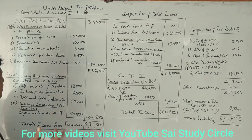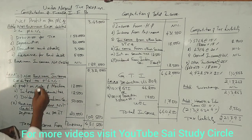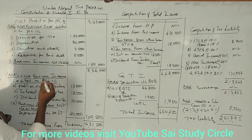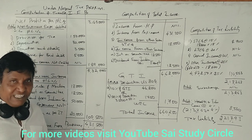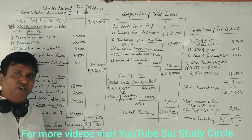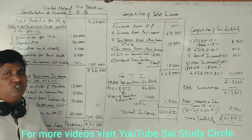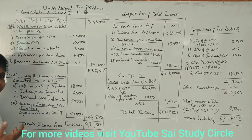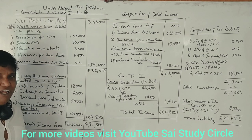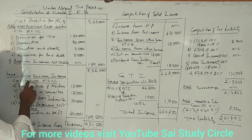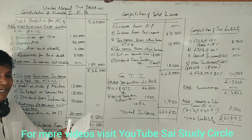The second addition item is business incomes not credited. We don't have any information about non-business incomes not credited in the adjustment, so ignore it. As per the proforma, we also have over-valuation of opening stock and under-valuation of closing stock — no need to take them since no stock information is given. Now we come to the less items. The first less item is non-business incomes already credited to the profit and loss account. Check the credit side balances — first item is gross profit, please ignore it.